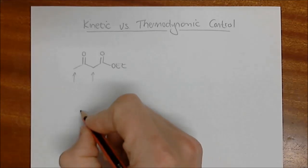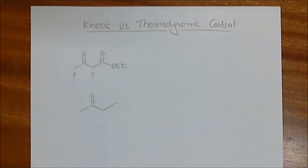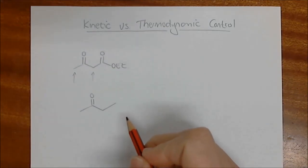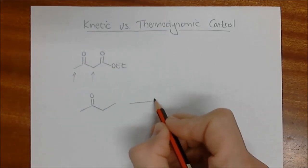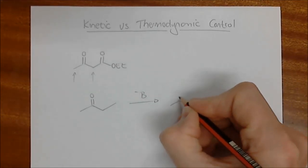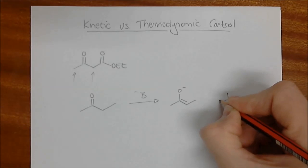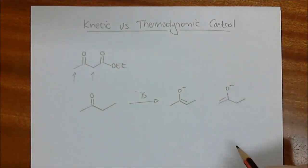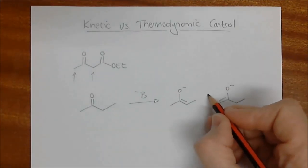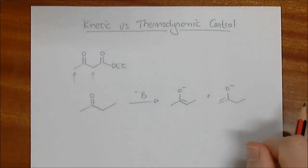But if I put down one of the simplest of ketones, 2-butanone, and if we treat that with a base, I hope you appreciate that there are two possible enolate possibilities. The one looks like that and the other one looks like this over here. So we've got two possibilities over there.